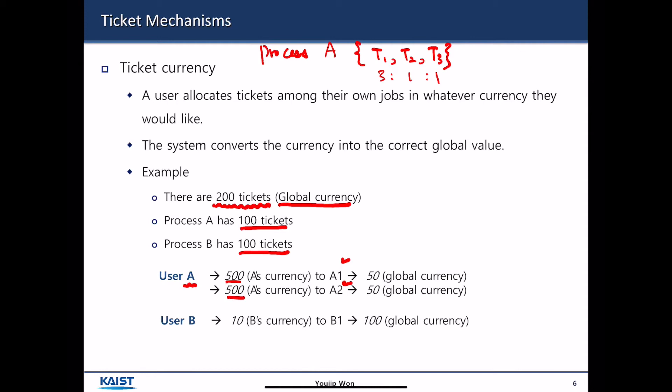Then in user B, it has only one thread named B1. And then user B defines 10 as its own currency. Because there's only one thread in B1, so thread B1 will get all of user B's CPU share.